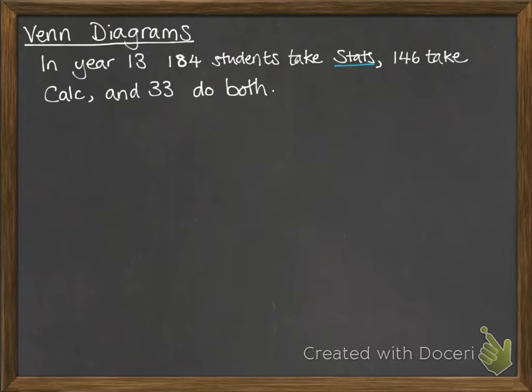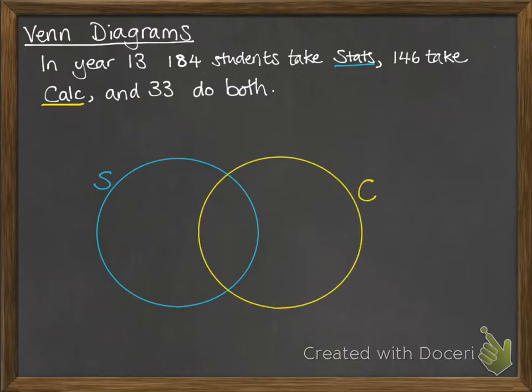So let's have a look at stats. I'm going to do that in blue. So we have a circle to represent the stats students, and then for calculus it's going to be a yellow circle, and we are going to have some overlap there of the students that do both things.